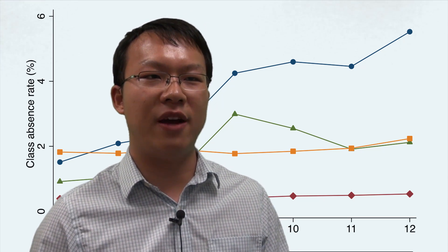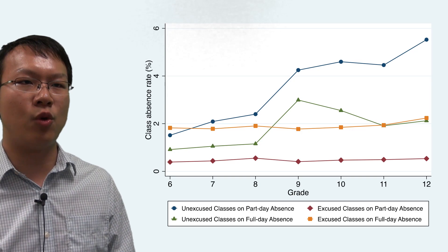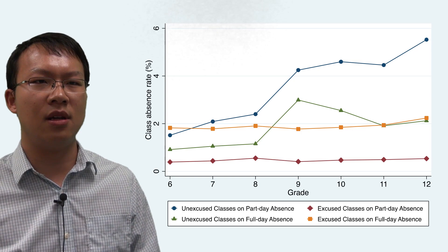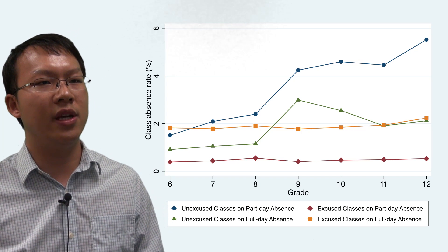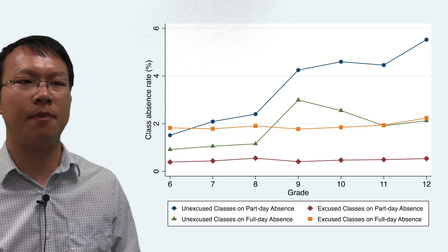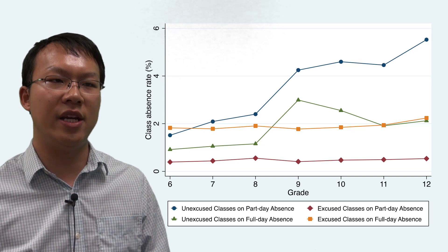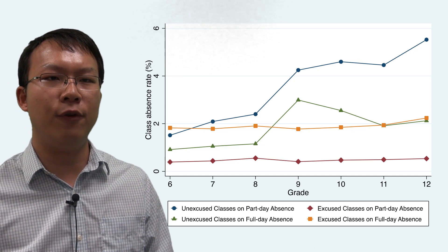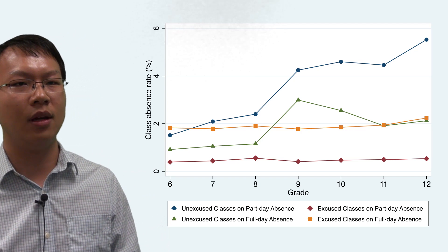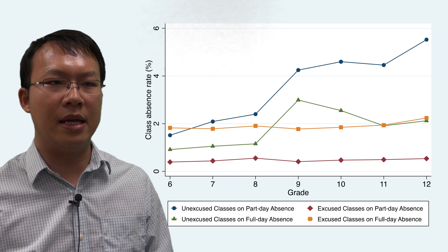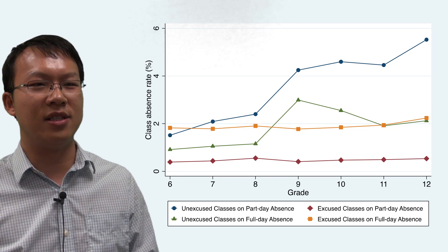Lastly, we ask how prevalence and patterns in part-day class absences differ across different types of students. In high school, unexcused class absences are far more common than excused part-day absences and both excused and unexcused full-day absences. Unexcused class absences on both full days and part days see a discrete jump in the transition from middle school to high school. While full-day unexcused absences decline later on, part-day unexcused absences continue to grow through 12th grade, making part-day absence a major driving force behind the increase in total absences.